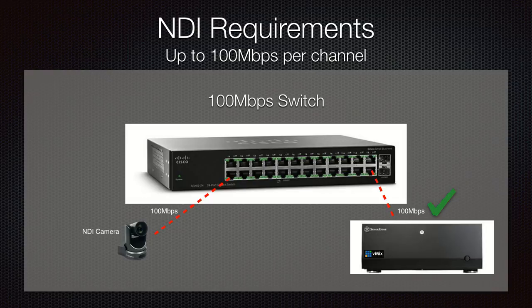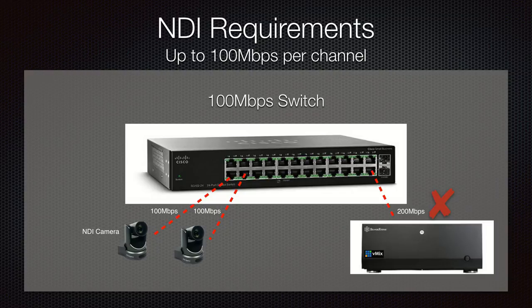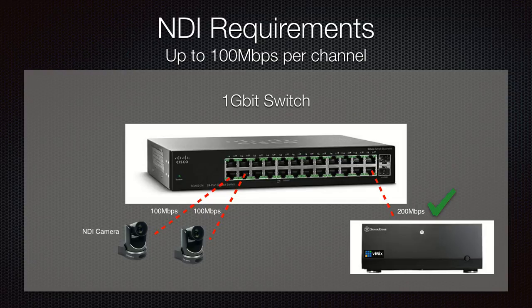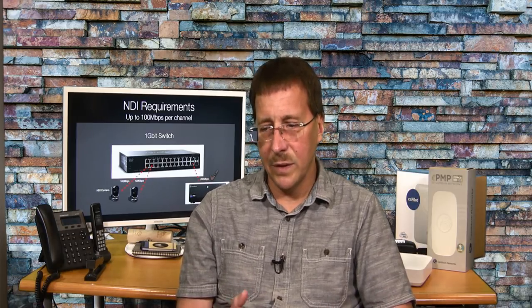NDI requires about 100 megabits per channel. If you took an old 10/100 switch with one NDI camera hooked up to vMix, everything would work fine — 100 meg in and 100 meg out to your computer. As soon as you plug in a second NDI camera, both cameras are sending 100 meg to the switch, but now you're trying to pull 200 meg out of one port to vMix — and things break. Plugging in a gigabit switch solves that problem. But it's not as simple as just a big switch, because if you have lots of devices competing for resources, contention is also a real issue.